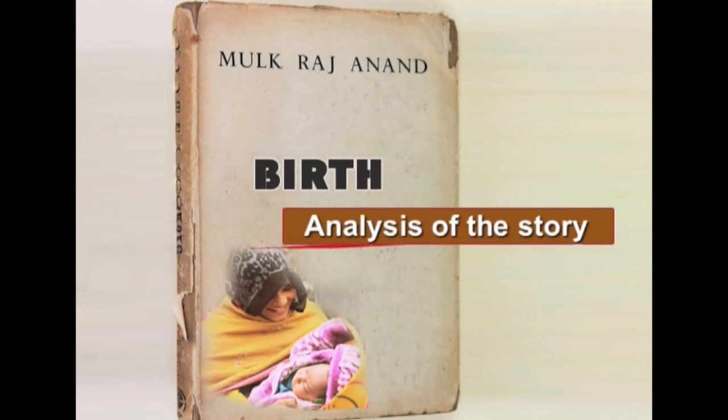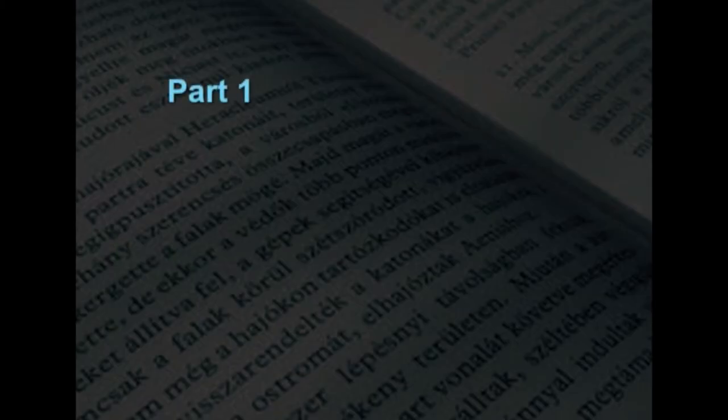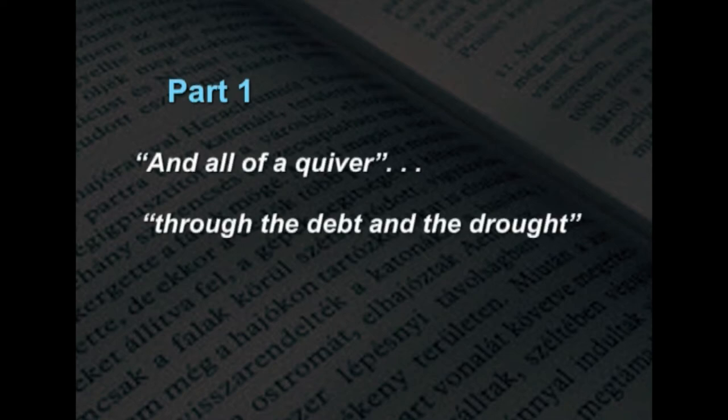Now let us look at the analysis of the story. For convenience, let's divide the story into four parts and analyse them one by one. Part one runs from the beginning of the story to the end of the paragraph which begins 'all of a quiver' and ends 'through the debt and the drought.'